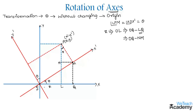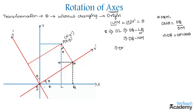Considering triangle OQM, cos theta equals adjacent over hypotenuse, which is OQ divided by OM. So OQ equals OM times cos theta. Substituting, we have OQ minus NM.